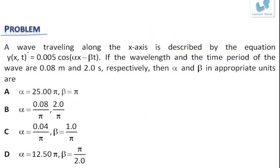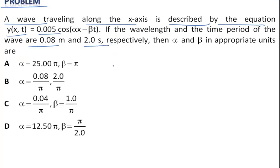Now the first problem is: a wave traveling along the x-axis is described by the equation y(x,t) = 0.005 cos(αx - βt). If the wavelength and time period of the waves are 0.08 meter and 2.0 seconds respectively, then α and β in appropriate units are.